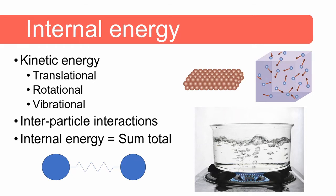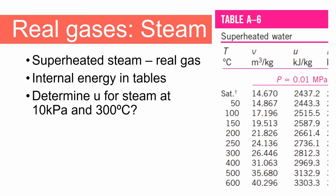We will consider the determination of internal energy for three types of gases: ideal gases, perfect gases, and real gases. Let's start with real gases. Superheated steam is characterized as a real gas. The symbol for internal energy is U, and its units are kilojoules per kilogram. The values of internal energy for steam can be found in the steam tables, either in your handbook or on the internet. For this example, the question asks us to determine U, the internal energy, for steam at 10 kilopascal and 300 degrees Celsius.